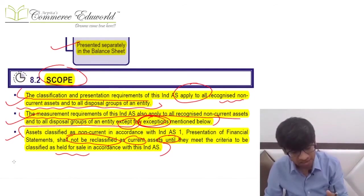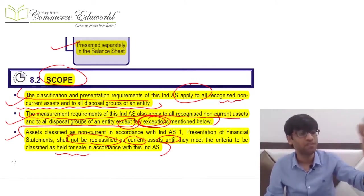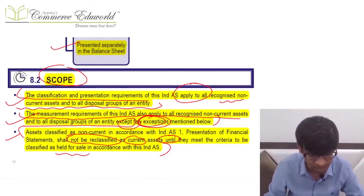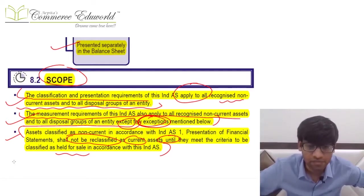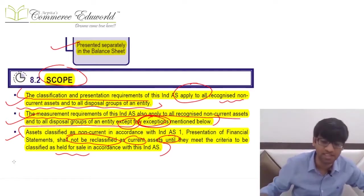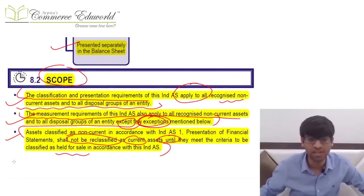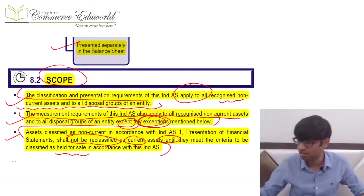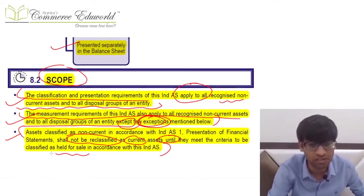Normally, a non-current asset classified as non-current as per IND AS 1 will remain a non-current asset until it is reclassified as current. It is only when it is reclassified as held for sale under IND AS 105 that it can be considered current. Until that time it will be considered as a non-current asset only. So normally a non-current asset remains non-current under IND AS 1 unless it is classified as held for sale.